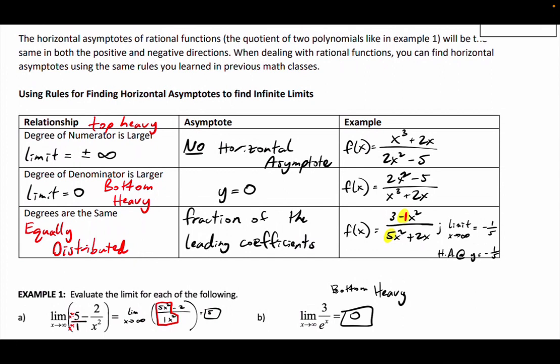Equally distributed — we have to make a fraction using the leading coefficients for the matching degrees. Since the top degree was two and the bottom was two as well, those are the guys we look at. So negative one over five. And that's the same value as the asymptote.